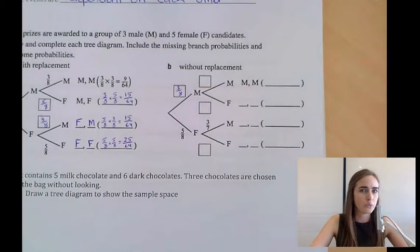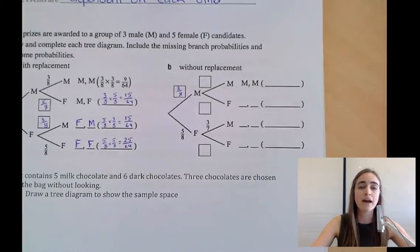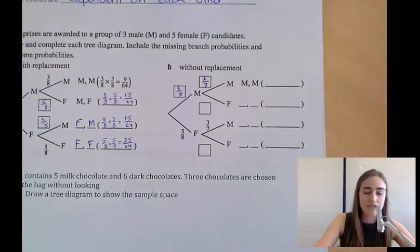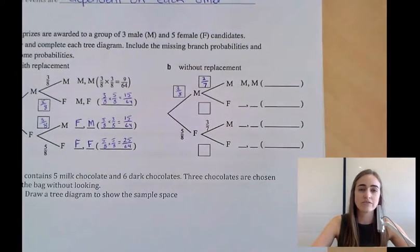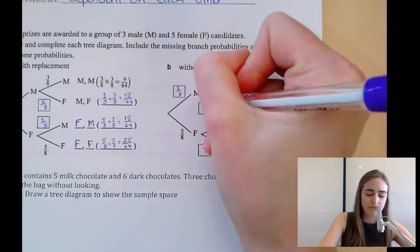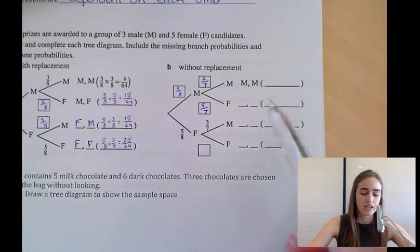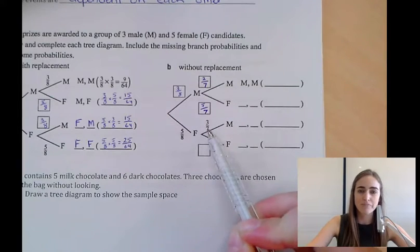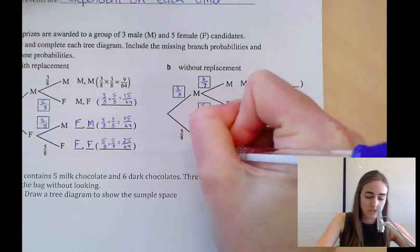The ratio of males to females in the second stage depends on who won the first prize. If a male won first, there are now only 2 males left out of 7 total, giving a 2/7 chance of a male winning and 5/7 for a female. If a female won first, there are still 3 males out of 7, giving 3/7 for male. And since one female was already chosen, there are only 4 females left, giving 4/7 for female.